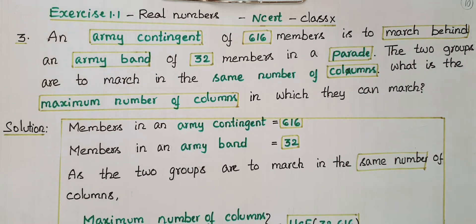Here the problem is: an army contingent of 616 members is to march behind an army band of 32 members in a parade. The two groups are to march in the same number of columns. What is the maximum number of columns in which they can march?